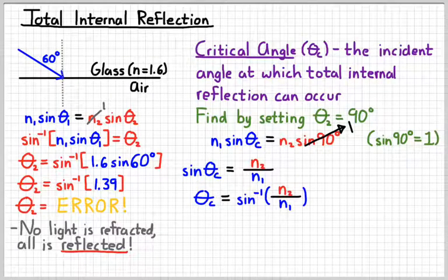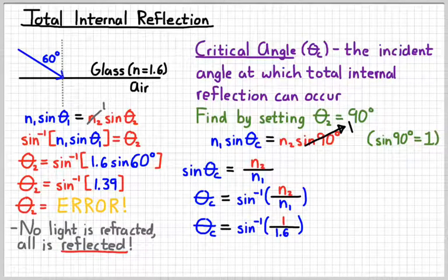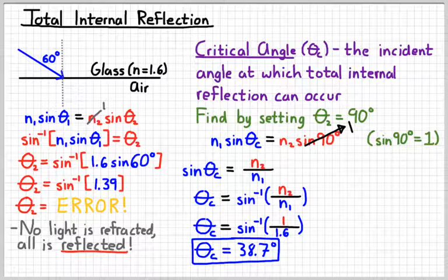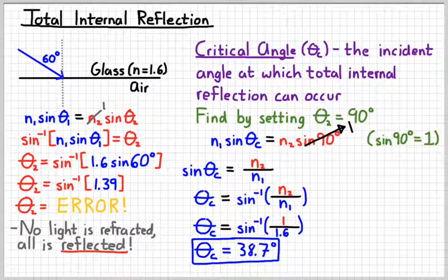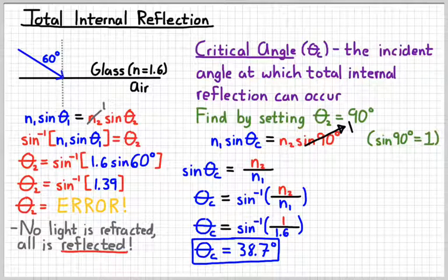And so I can say that the critical angle is the inverse sine of n2 over n1. So for this situation, 1.6 being n1 and 1 being n2, then the critical angle would be 38.7 degrees, about 39 degrees, give or take. So if you shine the light at exactly that angle,